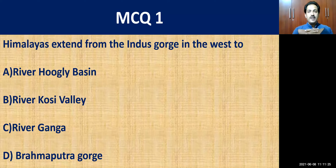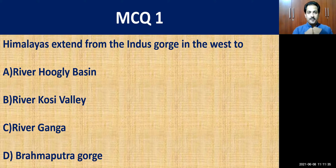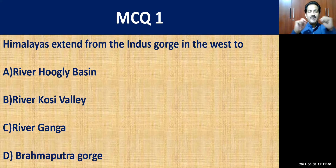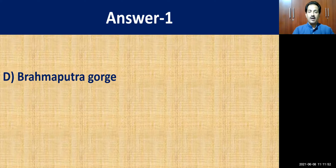The first question: Himalayas extend from Indus Gorge in the west to — you need to choose the correct answer. The four options are: River Hooghly Basin, River Kosi Valley, River Ganga, or River Brahmaputra Gorge. The correct answer is Brahmaputra Gorge.